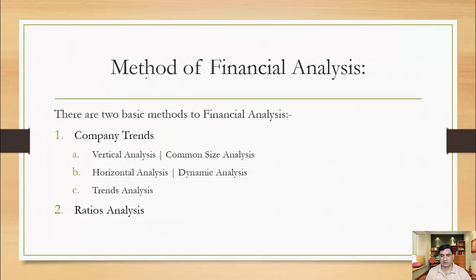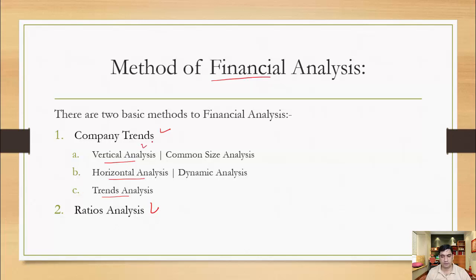There are two methods to do financial analysis: one is complete trend and second is ratio analysis. This is also how we can divide the financial analysis process. The first is vertical analysis, the second is horizontal analysis, and the third is trend analysis. In case of vertical analysis, you calculate every item of the income statement as a percentage of sales, and every item of the balance sheet as a percentage of total assets.